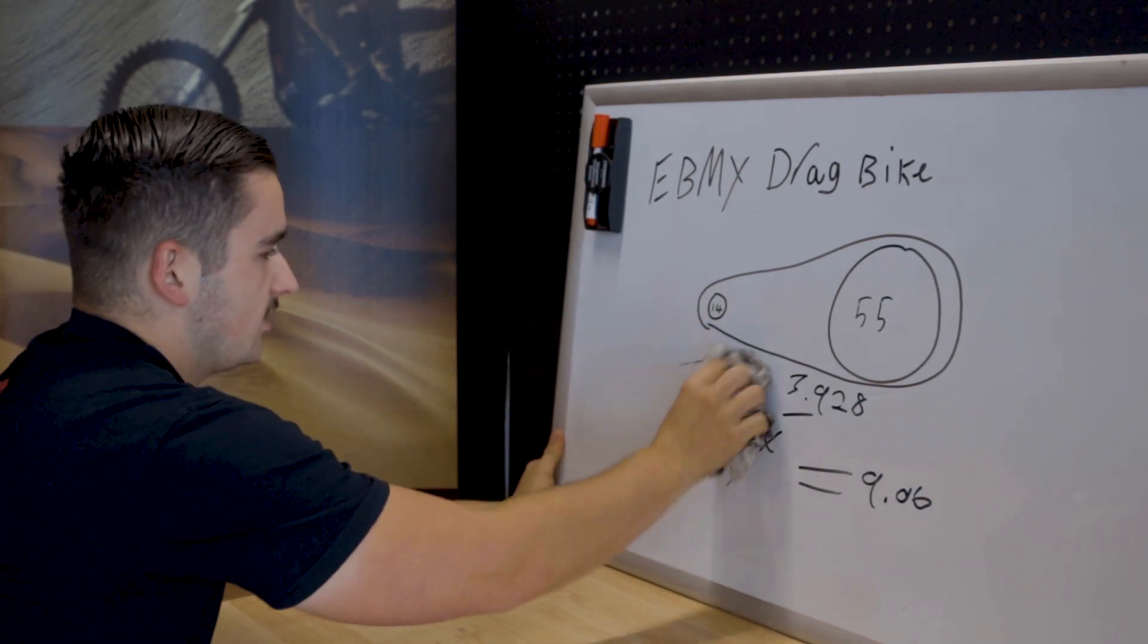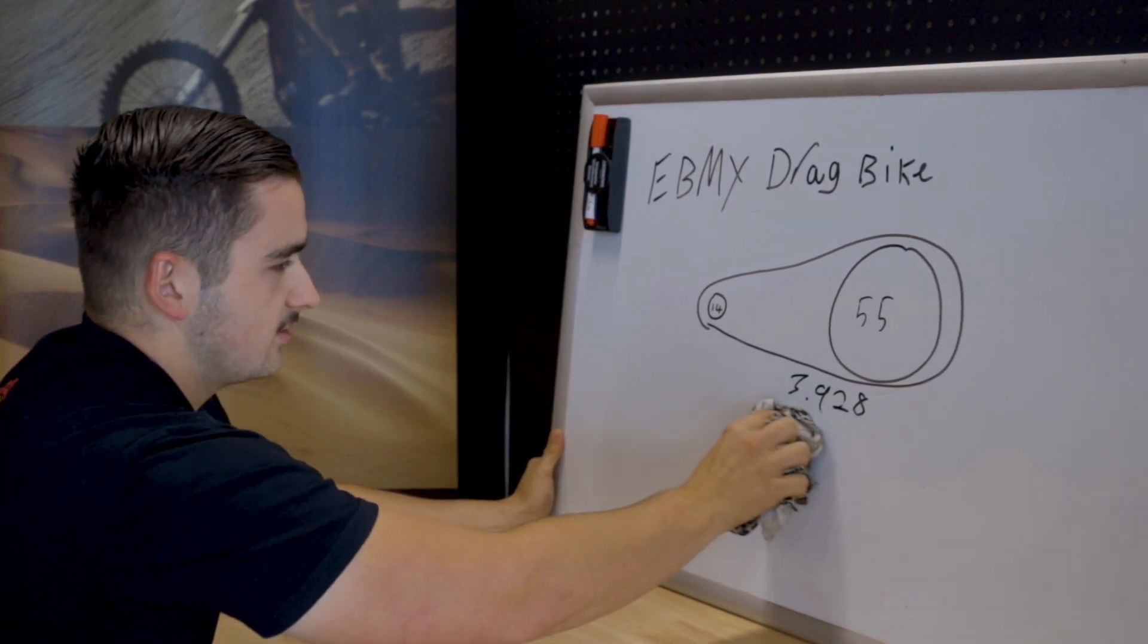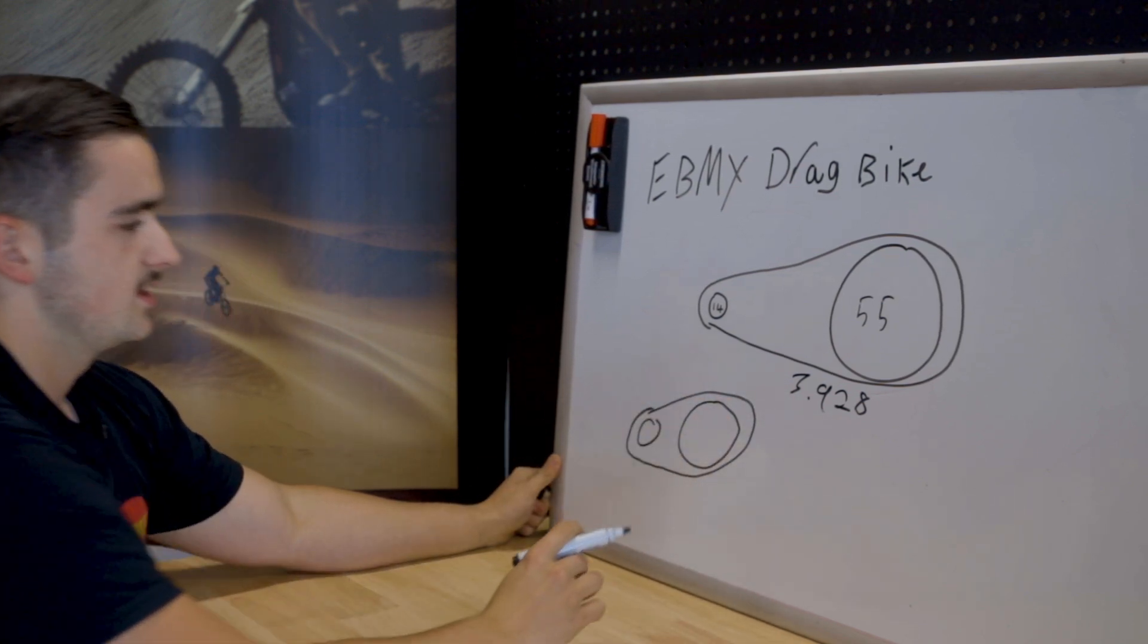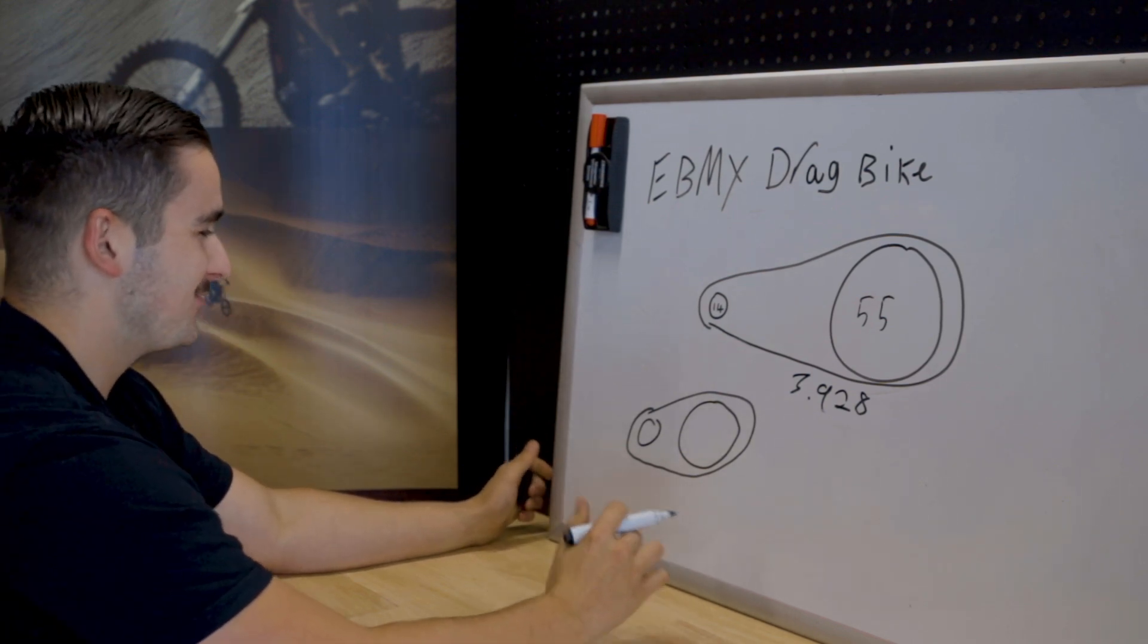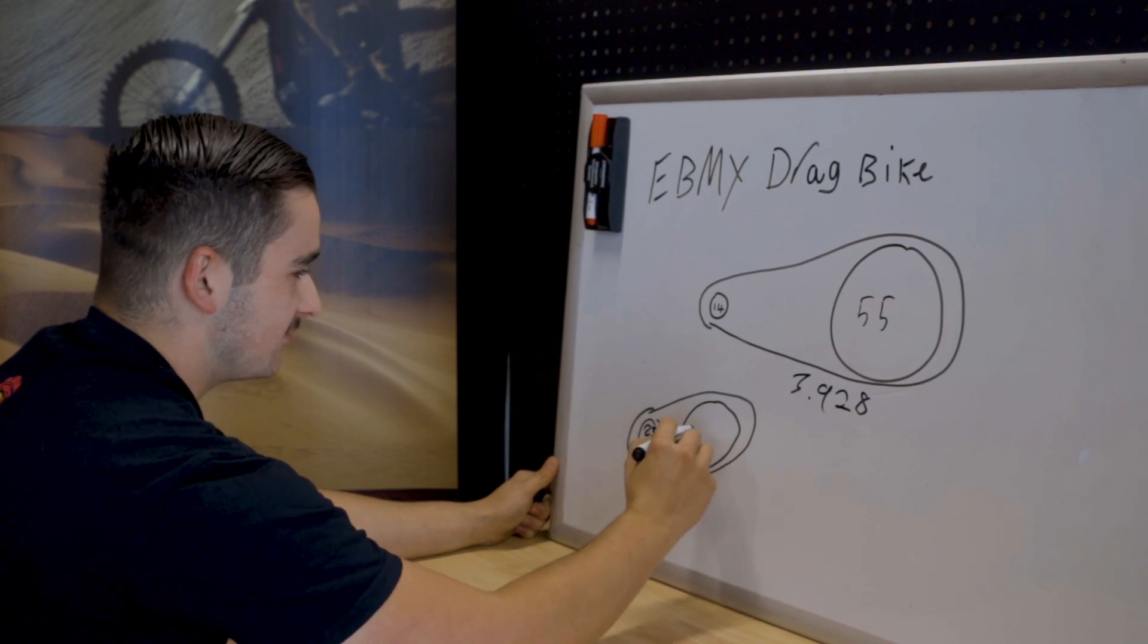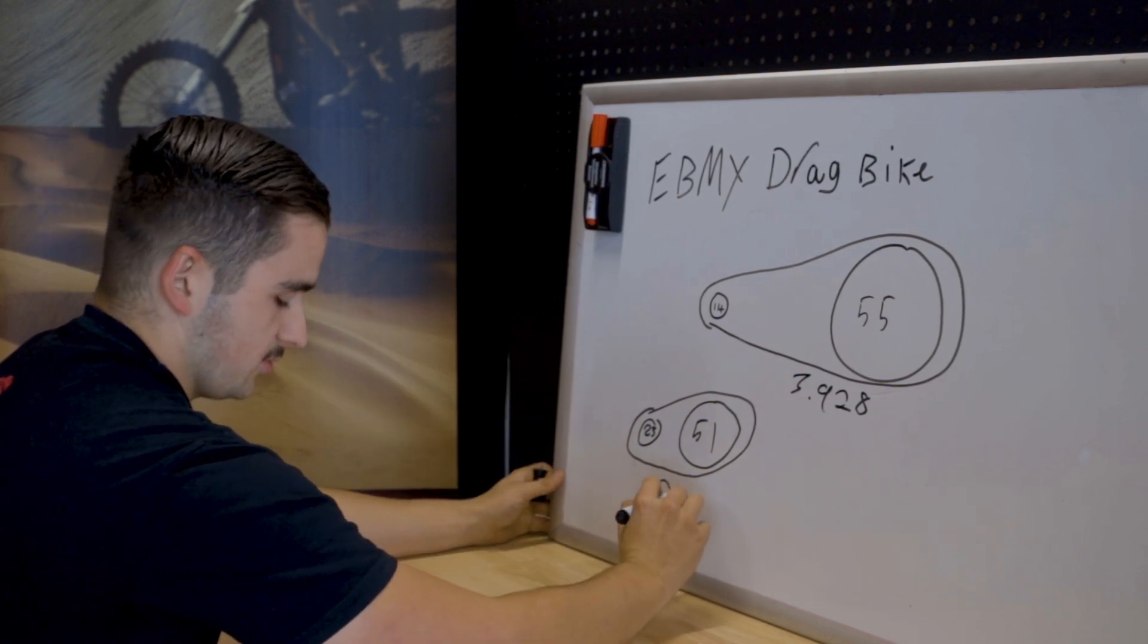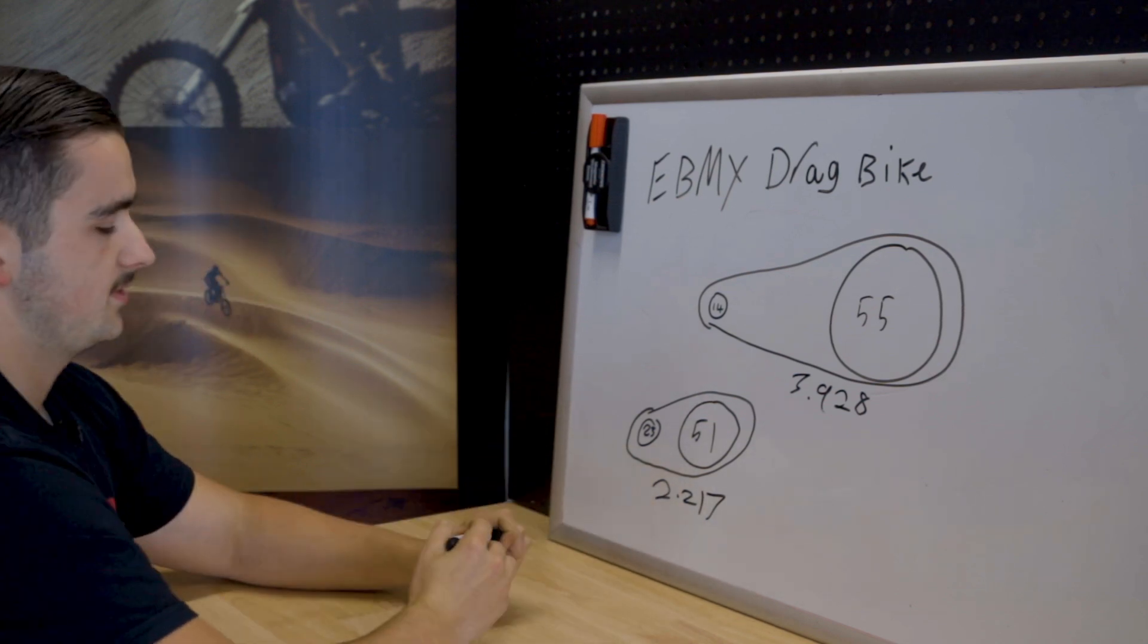So then let's say we had a stock Suron belt drive. Don't mind my terrible drawing but it's going to work nonetheless. That is terrible but we're going to go with it. So we have a front sprocket of 23 and a rear sprocket of 51 on the belt drive. Same thing, we divide this number by this number which gives us 2.217.